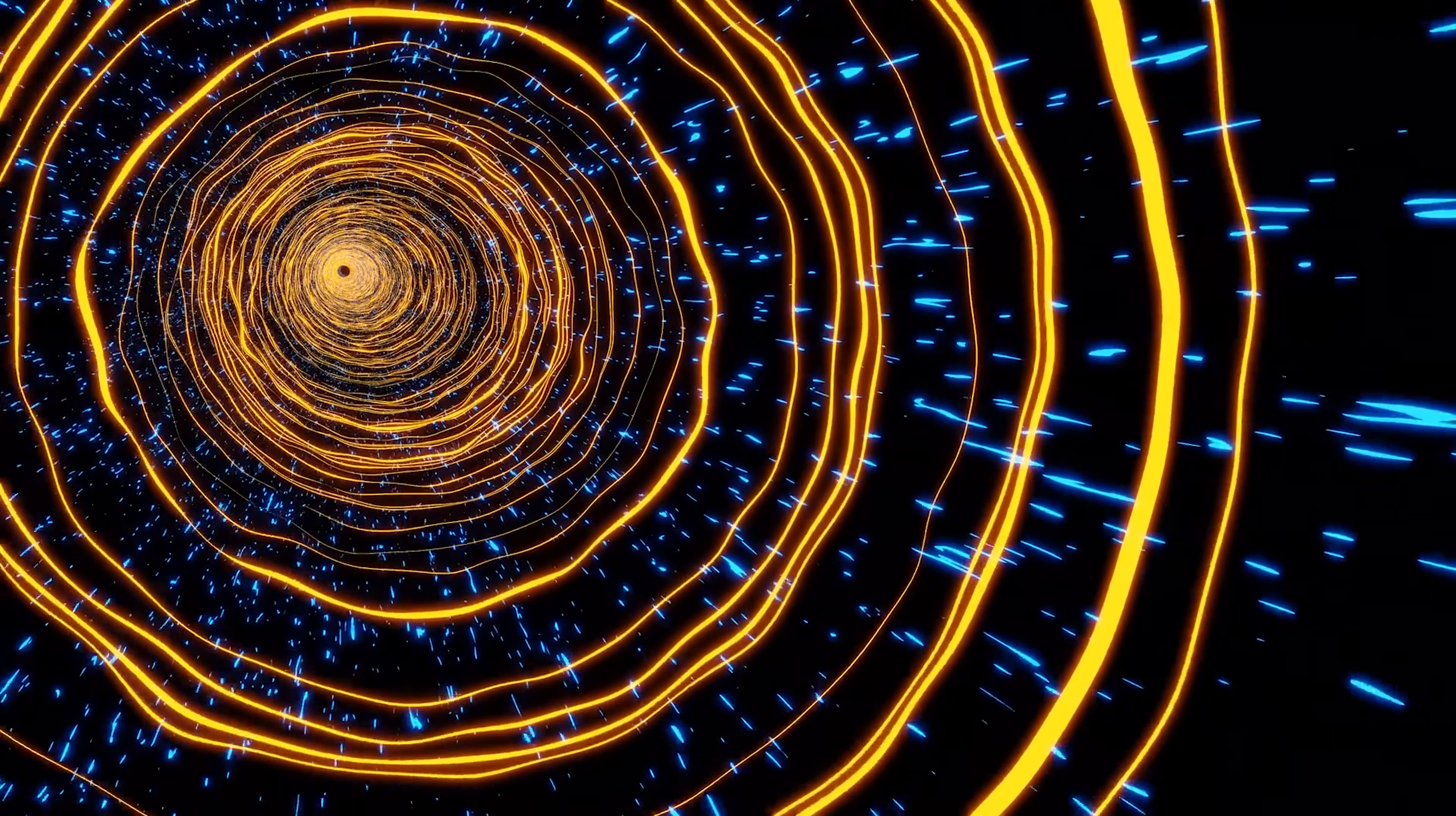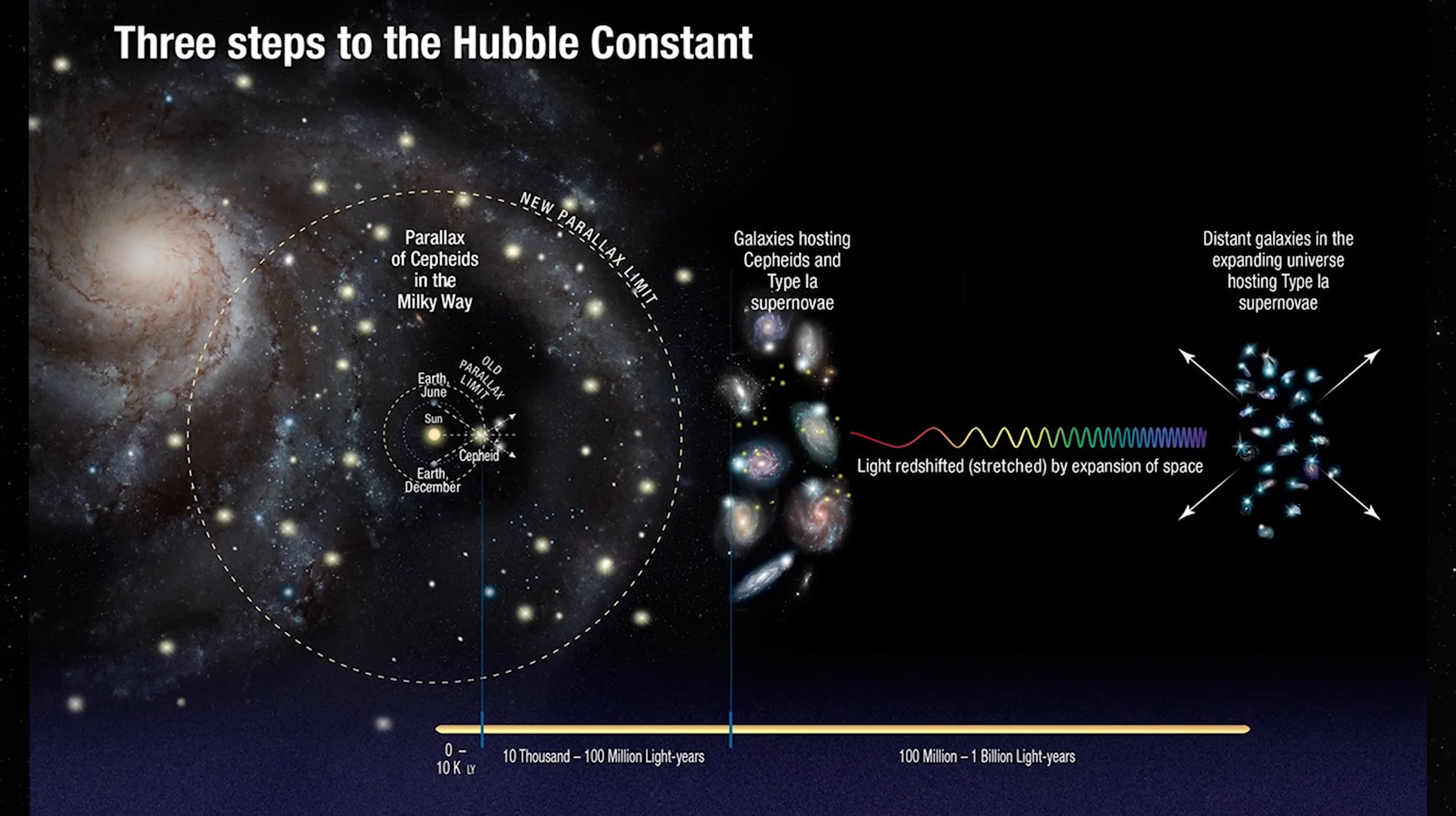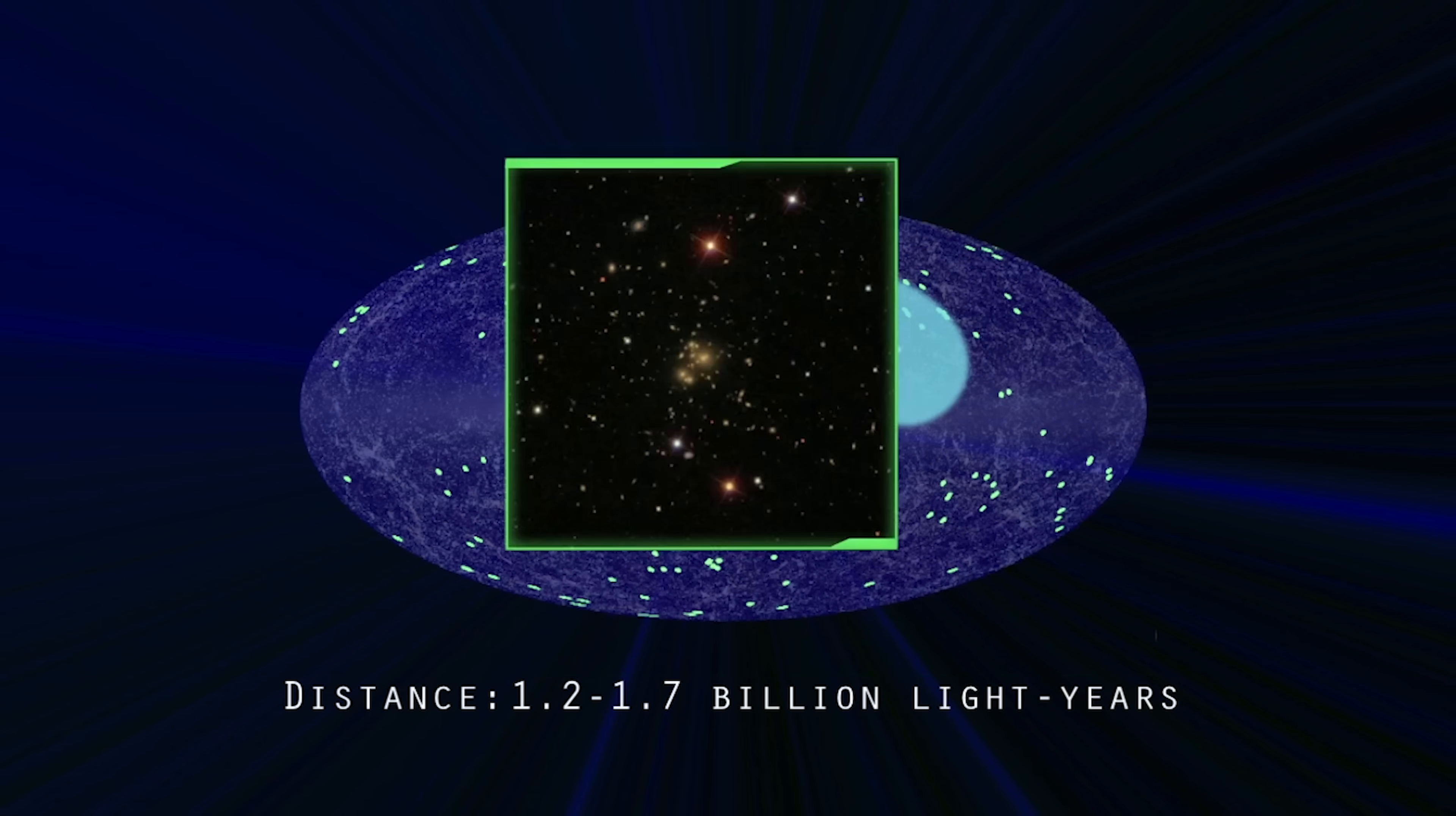To understand the scale of this problem, we have to rewind the cosmic clock. For decades, scientists have used two primary tools to estimate the age of the universe, the expansion rate and the cosmic microwave background radiation, or CMB. The CMB, the faint afterglow left by the Big Bang, has been measured in exquisite detail by satellites like COBE, WMAP, and Planck. From that data, cosmologists estimated the universe to be about 13.8 billion years old.